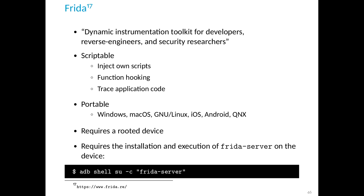There's a great tool called Frida — a dynamic instrumentation toolkit for developers, reverse engineers, and security researchers. It's scriptable, so you can inject your own scripts, do function hooking, and trace application code. It's portable and supports different operating systems. It requires a rooted device — in theory you can use a non-rooted device, but then you'd have to modify the application, which isn't an option here because of the code signature check. It also requires installation and execution of the Frida server on your smartphone.